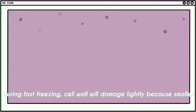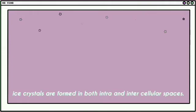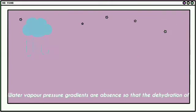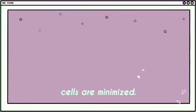During fast freezing, cell walls will damage lightly because smaller ice crystals are formed in both intra- and inter-cellular spaces. Water vapor pressure gradients are absent so that the dehydration of cells are minimized.